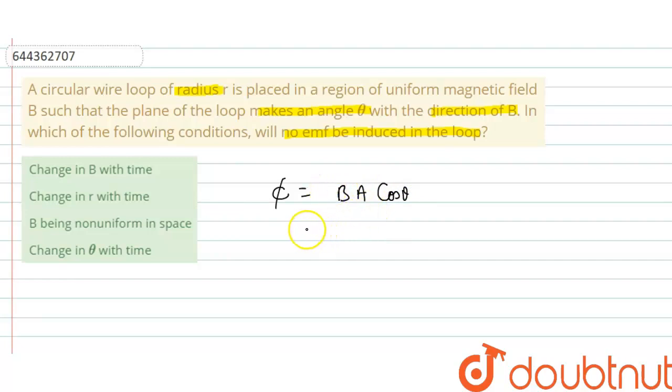where theta is the angle between area vector and magnetic field. Here you can see, in this case, area is pi r square into cos theta, so magnetic flux depends on the area vector and all these. So induced EMF is equal to d phi by dt,